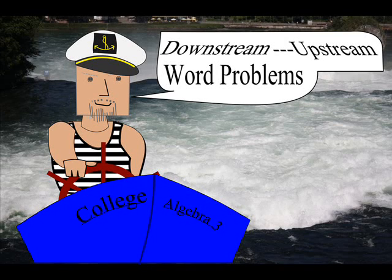Hello everybody. Welcome to our upstream downstream word problems mini lecture. A type of word problem that populates college algebra textbooks mostly in terms of boats and rivers, but sometimes also in terms of airplanes and wind goes as follows.